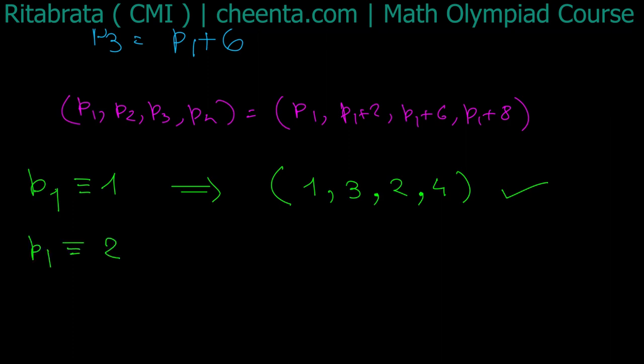Can p1 be congruent to 2 mod 5? That would give me 2 + 2 = 4 mod 5, 2 + 6 = 8 mod 5, but 2 + 8 = 10. So that gives me p4, that is p1 + 8, divisible by 5, and that is a problem. So p1 cannot be 2.